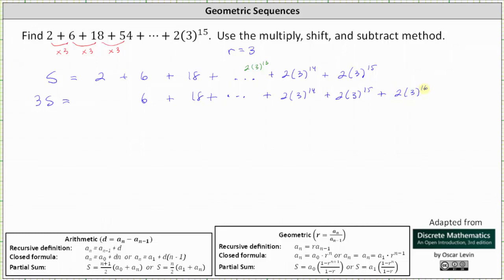Now the next step is we subtract the second equation from the first equation. So on the left, we have minus 3s. On the right, we have minus this entire sum. On the left, s minus 3s is negative 2s equals on the right, we still have the 2.